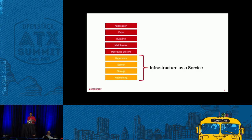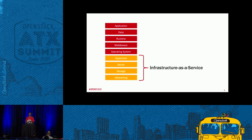You come in at the operating system, middleware, runtime, data, and application layers. You can install whatever operating system you want — you don't have to worry about networking, storage, or specific servers and hypervisors. That's all taken care of. All you care about is: 'I want to install an operating system on X amount of resources.' That's what infrastructure as a service offers you.